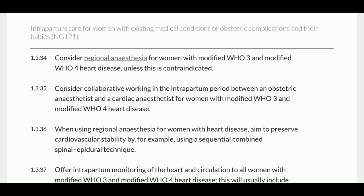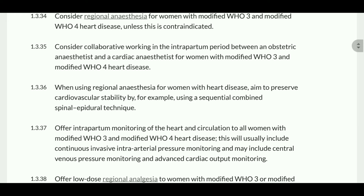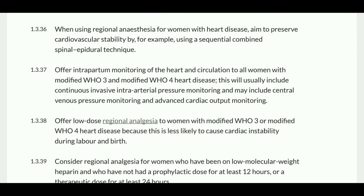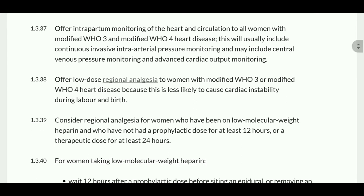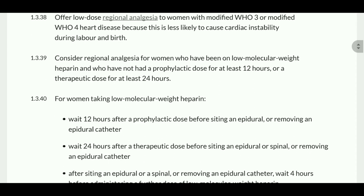For WHO 1 and 2, discuss the options; for WHO 3 and 4, consider regional analgesia unless contraindicated. Consider collaborative working in the intrapartum period between an obstetric anesthetist and cardiac anesthetist for women with modified WHO 3 and 4 heart disease. When using regional analgesia or anesthesia for women with heart disease, aim to preserve cardiovascular stability, for example using a sequential combined spinal-epidural technique. Offer intrapartum monitoring of the heart and circulation to all women with modified WHO 3 and 4 heart disease, including continuous invasive intra-arterial pressure monitoring and possibly central venous pressure monitoring and advanced cardiac monitoring.